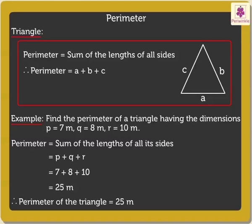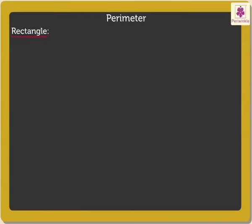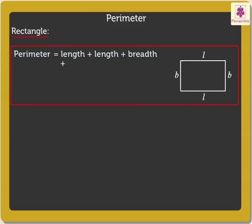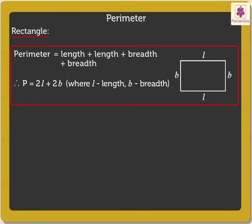Now, let us look at the formula for the perimeter of a rectangle. We have already learnt that a rectangle has four sides, wherein its opposite sides are equal in length. Thus, the perimeter of a rectangle is equal to length plus length plus breadth plus breadth. Therefore, perimeter is equal to 2 times L plus 2 times B, where L is the length and B is the breadth, which is equal to twice of length plus breadth.